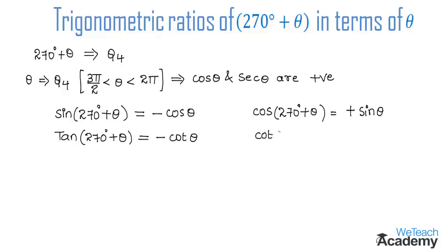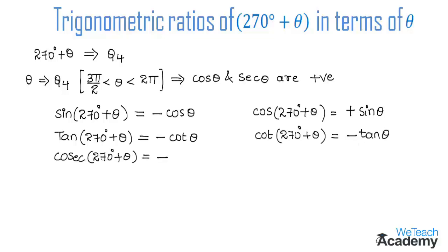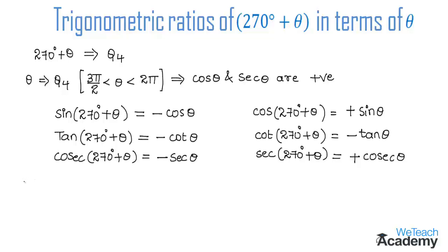Similarly, cot(270° + θ) equals minus tan theta. Cosecant(270° + θ) equals minus secant theta. For secant(270° + θ): in the fourth quadrant secant is positive, and secant changes to cosecant, so secant(270° + θ) equals cosecant theta.